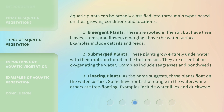Aquatic plants can be broadly classified into three main types based on their growing conditions and locations. First, emergent plants. These are rooted in the soil but have their leaves, stems, and flowers emerging above the water surface. Examples include cattails and reeds.